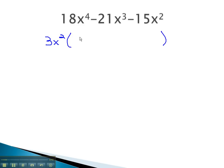Factoring out 3x squared will leave us with 6x squared minus 7x minus 5 in the parentheses. Once we've factored out the common factor, we will look inside the parentheses to factor this further.